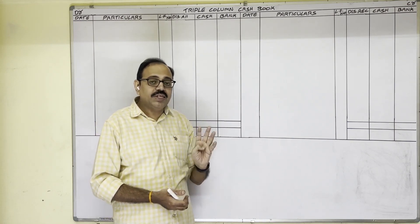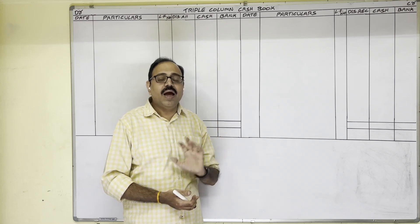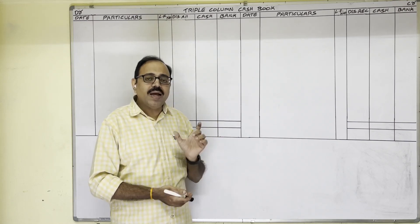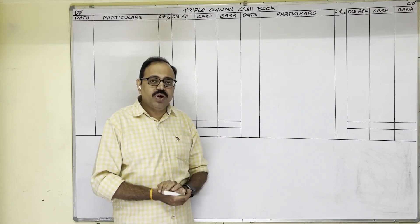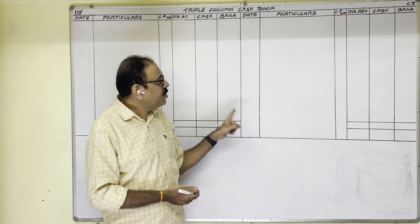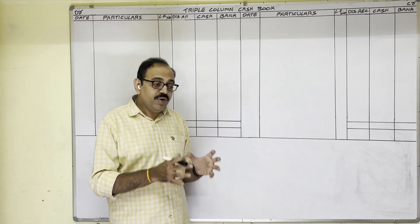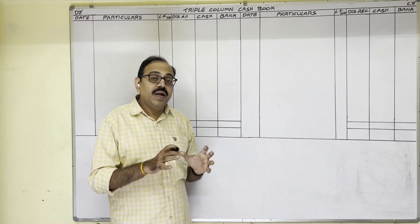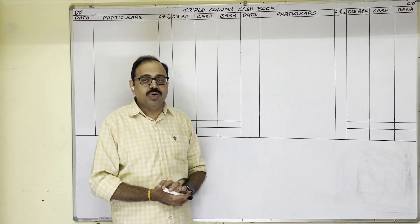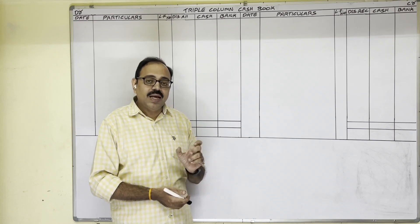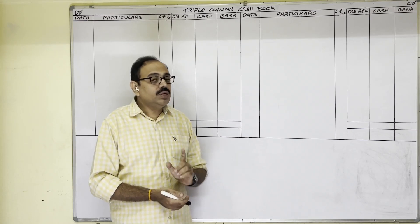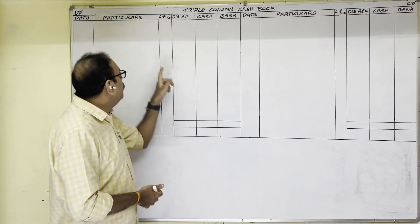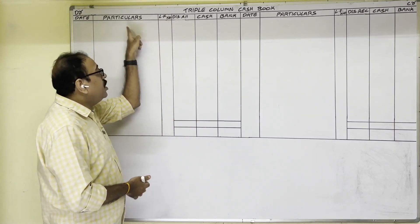In the question, the first two sentences give cash at bank and cash in hand — these two are known as opening balances. Cash in hand means the cash balance in the firm's cash box at the starting date of the month. This is an asset, and assets show a debit balance. Therefore, opening cash balance is always written on the debit side.